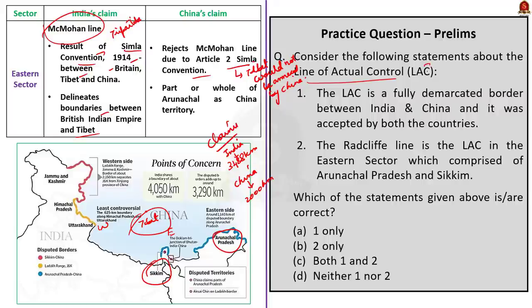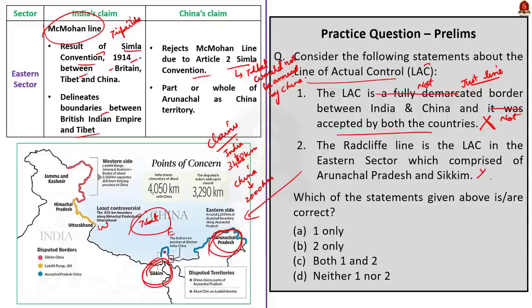Now let us approach the LAC question. Statement 1: The LAC is a fully demarcated border between India and China accepted by both countries — this is incorrect, as the LAC is not a fully demarcated border; it was not officially accepted by both countries. Statement 2: The Radcliffe Line is the LAC in the eastern sector comprising Arunachal Pradesh and Sikkim — this is also incorrect. The McMahon Line is the LAC in the eastern sector, not the Radcliffe Line. Note that the Radcliffe Line is the boundary between India and Pakistan, and the Durand Line is the boundary between India and Afghanistan. The correct answer is option D, neither one nor two.